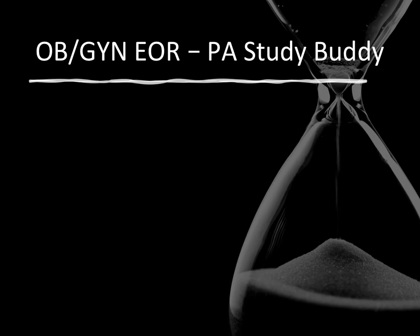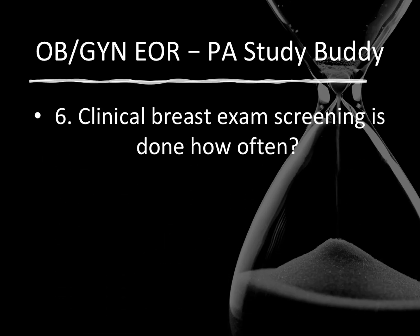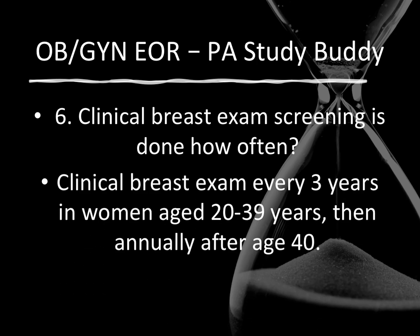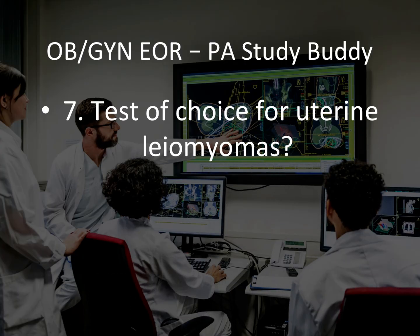Question 6: Clinical breast exam screening is done how often? The answer is clinical breast exam should be done every three years in women age 20 to 39, and then annually after the age of 40. So before 40, every three years; after 40, every year. Question 7: What is the test of choice for uterine leiomyoma — for fibroids? The test of choice is a pelvic ultrasound.